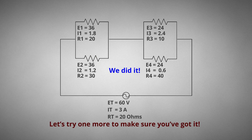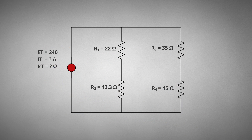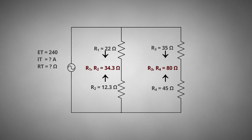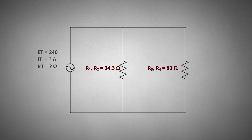Let's try one more to make sure you've got it. The first step is to identify what type of circuit you are trying to solve — this circuit has both parallel and series circuits. Use the series rules on resistance to combine; since series rules are simple, just add them together. Then redraw and combine. Now that we have redrawn the circuit, we need to solve for the remaining parallel circuit using the parallel reciprocal rule on resistance.